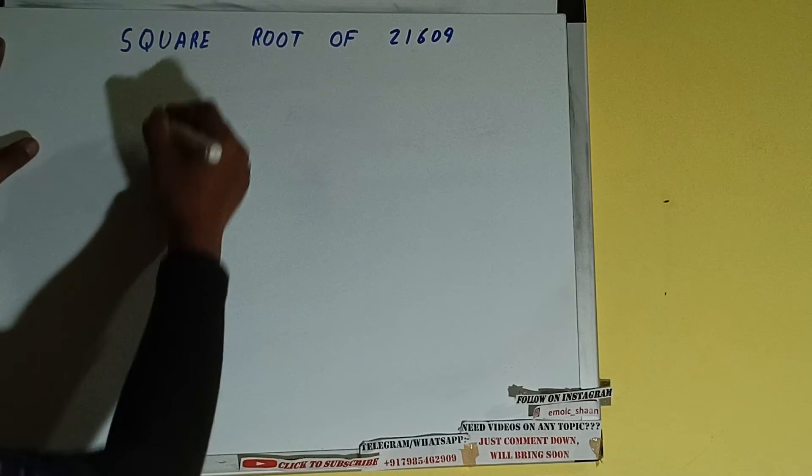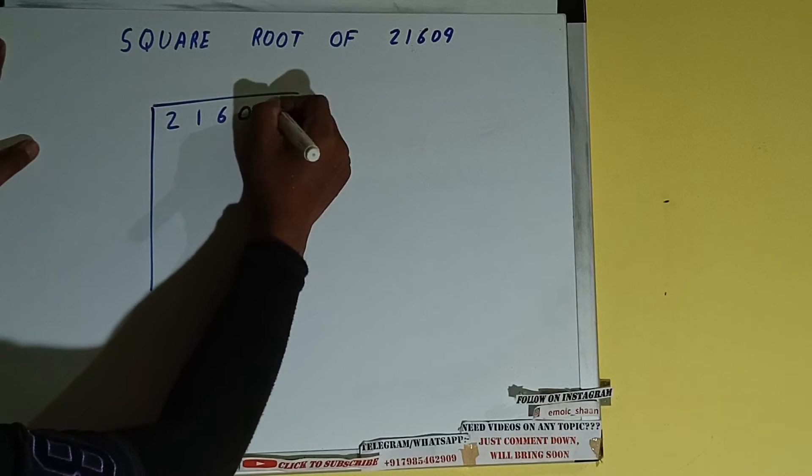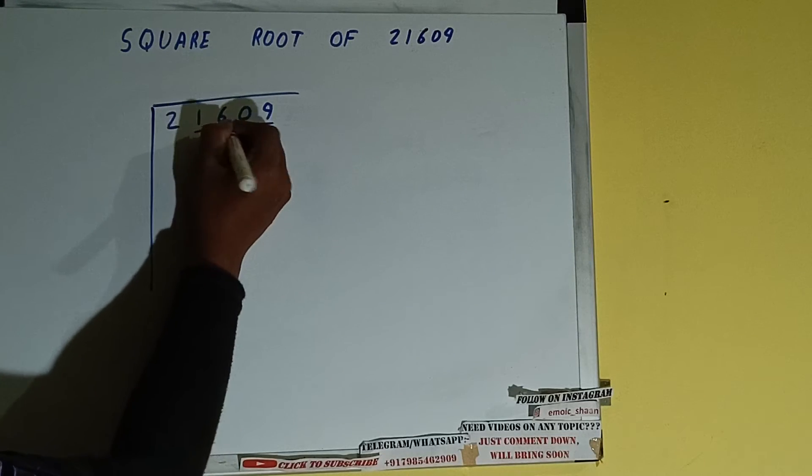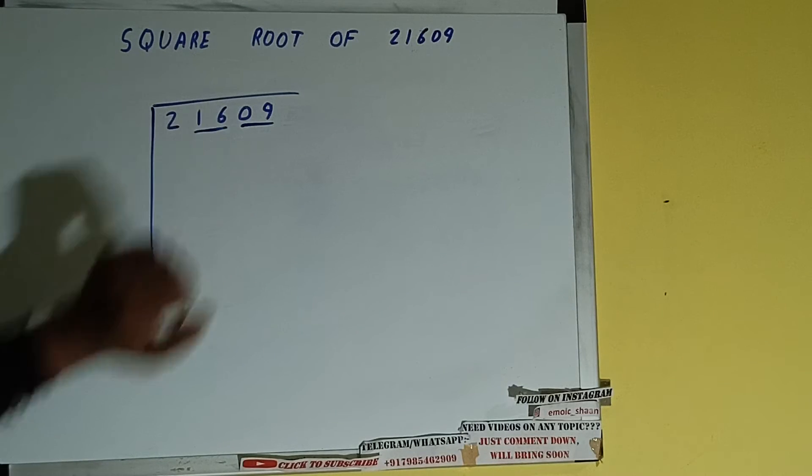First of all, we need to write the number like this: 21609. Next thing we need to do is form pairs from the right side. So one pair will be this, one pair will be this, and this two will be left out. So first we'll write this two and then we'll bring down the pairs.